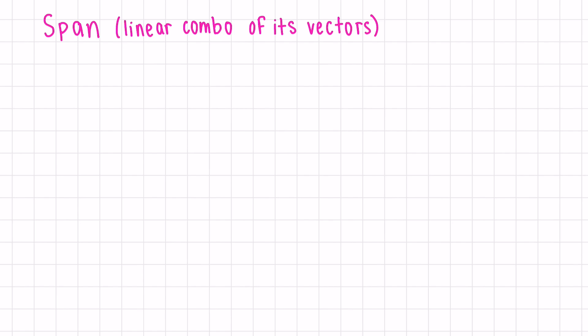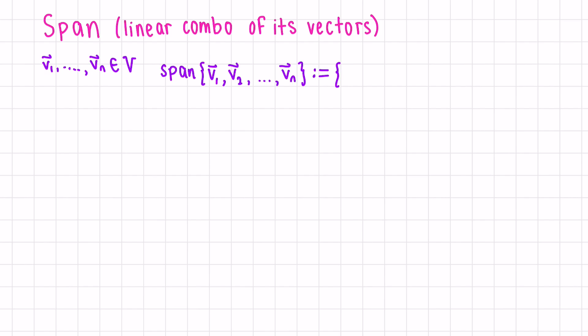What does span mean? It just means a linear combination of the vectors in the span. Let's say v1 all the way till vn are vectors in a vector space V. Then the span of these vectors is by definition all linear combinations of them, for all ai as an element of the real numbers, where a is any real coefficient. The span is considered a subspace — in fact, the smallest subspace of V containing the vectors v1 to vn.